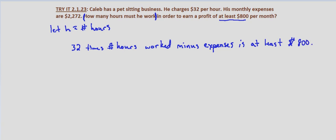Now let's take that sentence and put it into inequality form. 32 times the number of hours, that's 32h, minus his expenses of $2,272. You can put the comma in or leave it out. Typically when I'm solving equations I'll leave the comma out, but it's up to you.